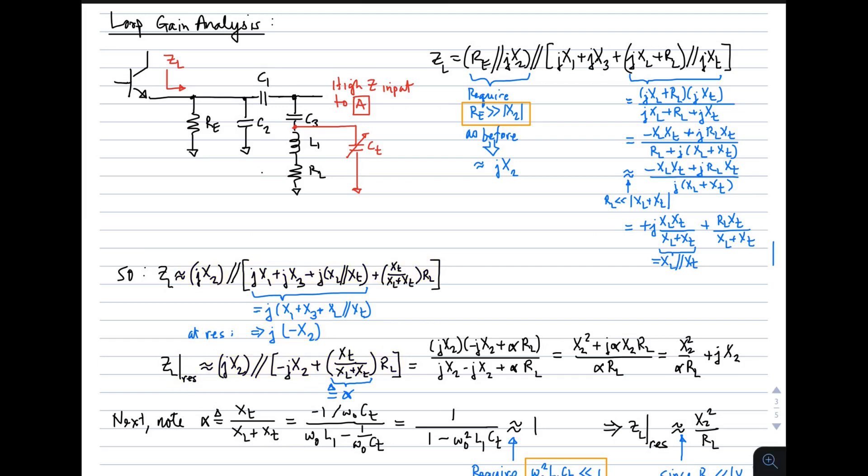Now we play the trick again with resonance. We're interested in this value at resonance, and at resonance we get that this whole mess is just equal to J times minus X2. So the impedance looking out of the emitter is given by this expression at resonance. Next, for convenience, I'm going to give this term here a name, XT over XL plus XT, I'm going to call alpha. That's going to simplify the math here a little bit. Using that notation, I have, writing it out as product over sum, this expression. I can just multiply through the numerator, I get X2 squared plus J alpha X2 R sub L over alpha R sub L, and I can write that out in two terms as shown here.